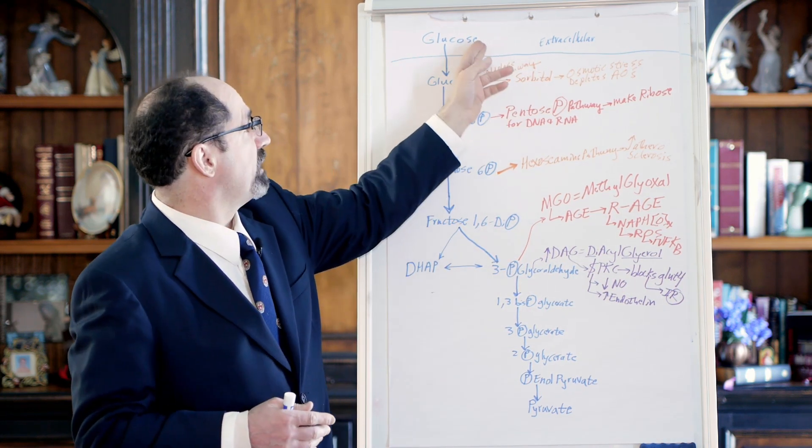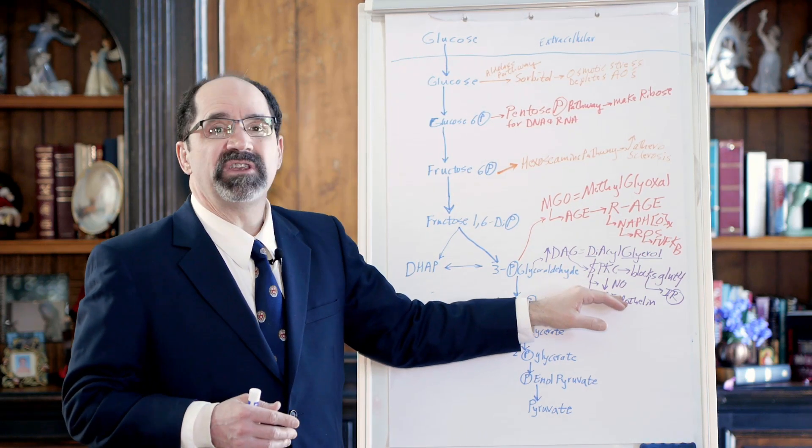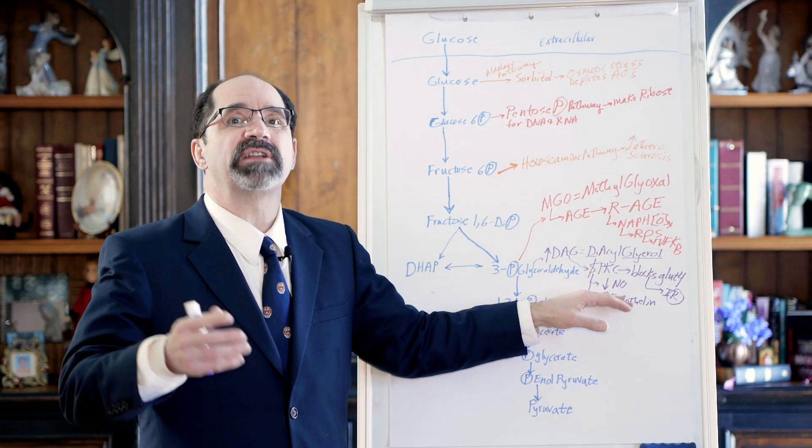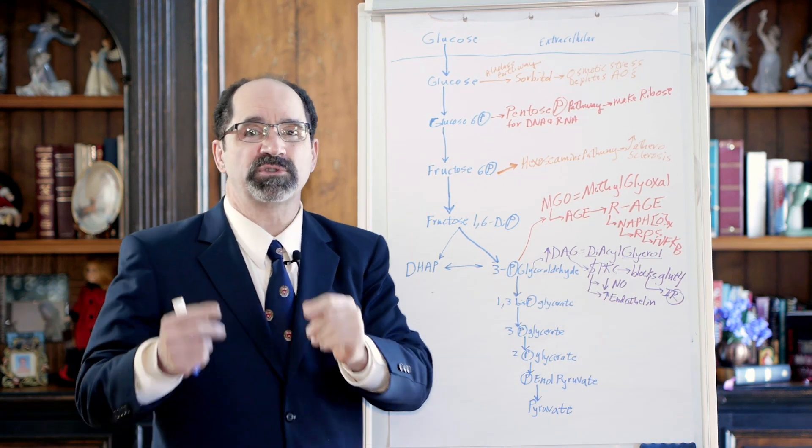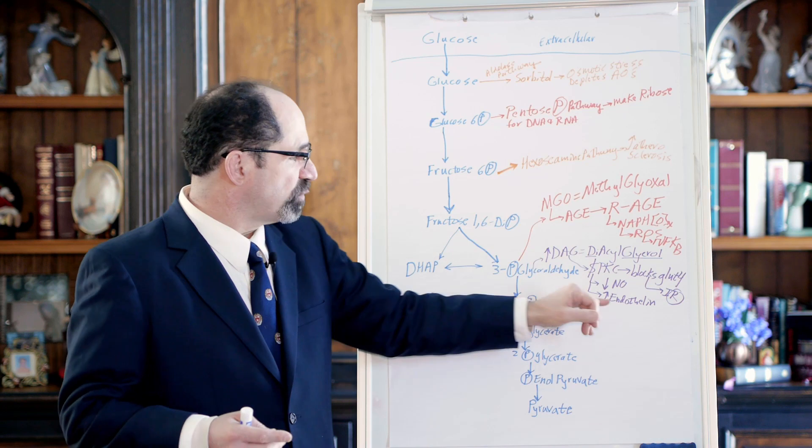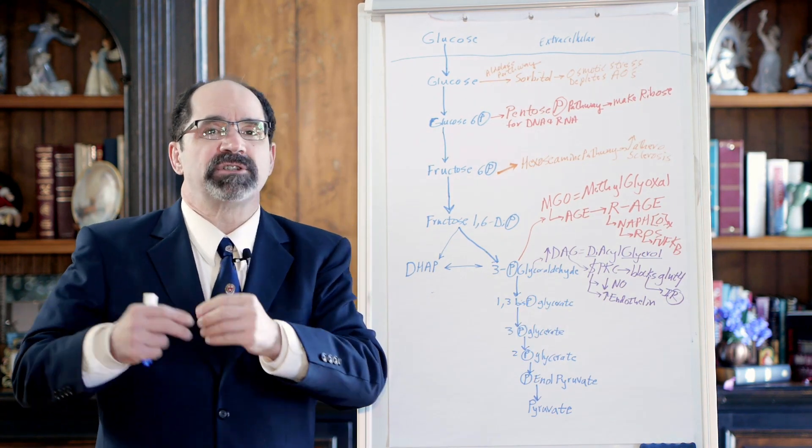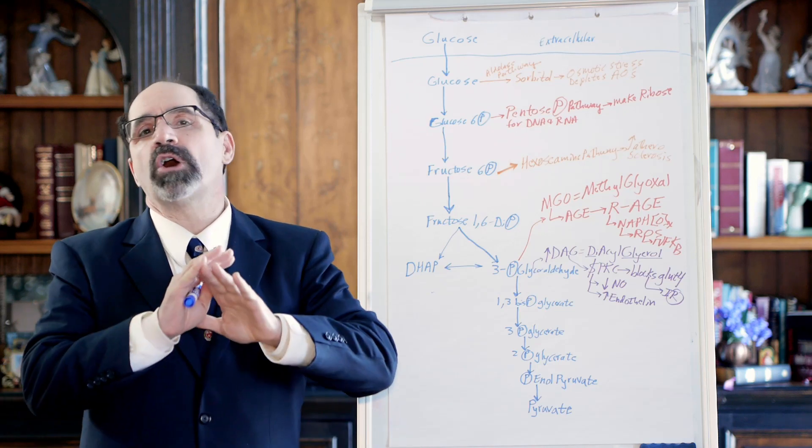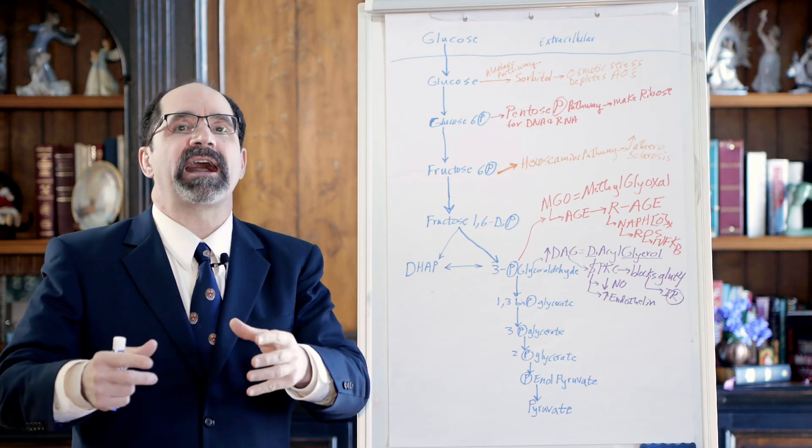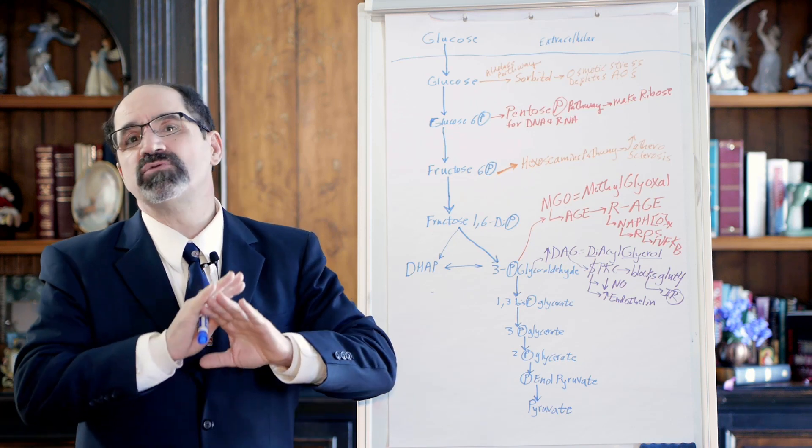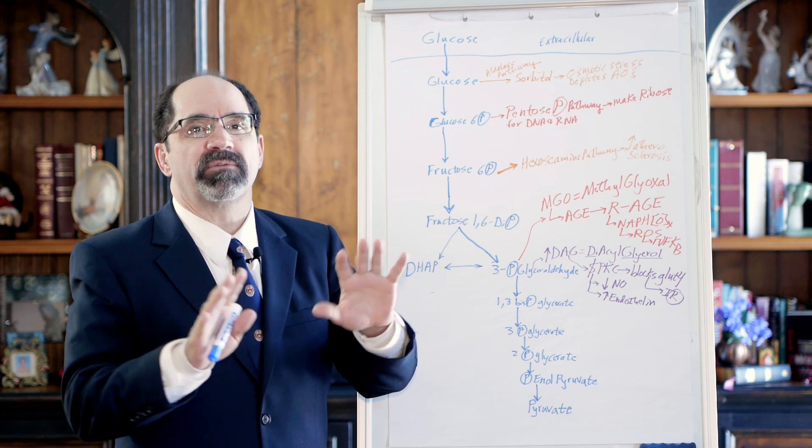In addition, protein kinase C causes inhibition of endothelial nitric oxide and it decreases nitric oxide leading to vasoconstriction in your blood vessels which predisposes to hypertension. As well as it increases endothelin, endothelin increases platelet aggregation and predisposition to clotting. So it's all bad, your vessels are shrinking down and the tendency to clot in the blood is increased, those are things you don't want.